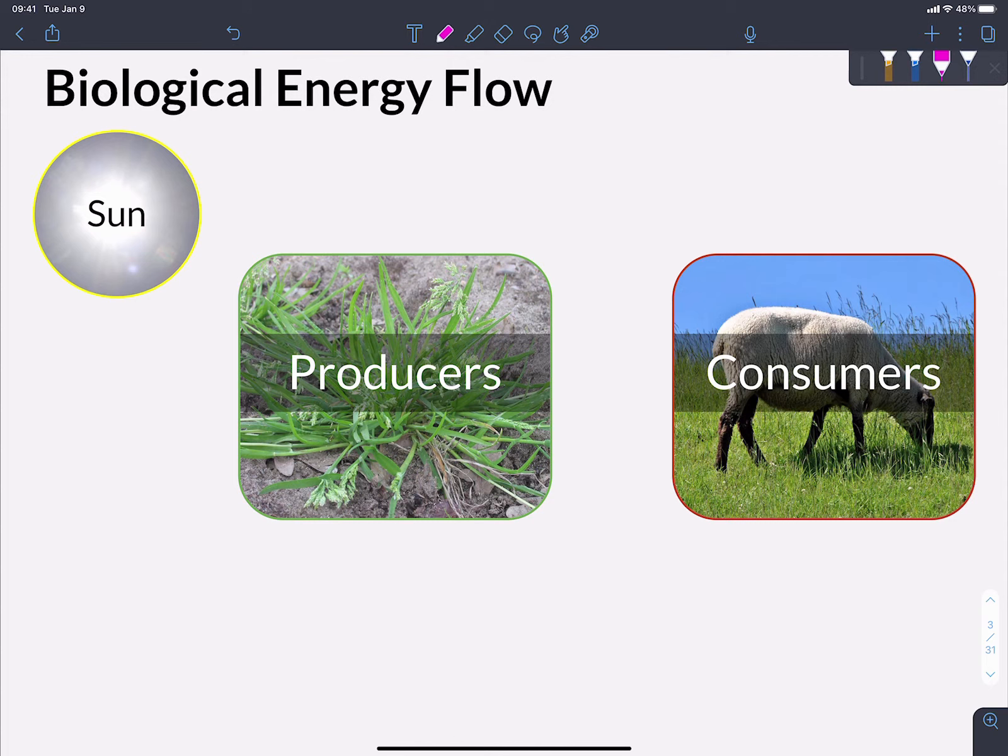When we think about energy moving through a biological system, we think about it flowing. So most every biological system on the planet gets its initial input of energy from the sun. That energy enters in from the sun in the form of electromagnetic radiation, specifically light. Light from the sun is then captured by producers, and producers are able to convert that light energy into chemical energy. And they pass that chemical energy on to consumers in the form of food.